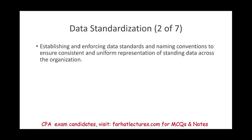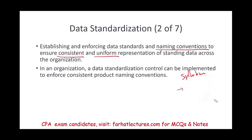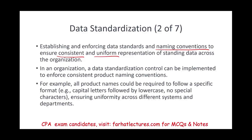Data standardization involves establishing and enforcing data standards and naming conventions to ensure consistent and uniform representation of standing data across the organization. For example, when working at a university, a syllabus file name had to include the course code, semester, whether it was fall or spring, the year, and the course ID — that's a naming convention. Similarly, all product names could be required to follow a specific format: capital letters followed by lowercase, no special characters, ensuring uniformity across systems and departments.